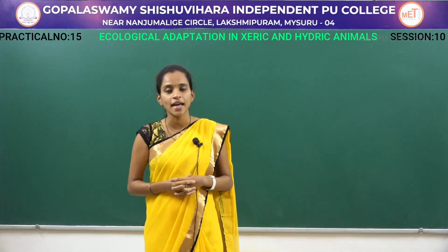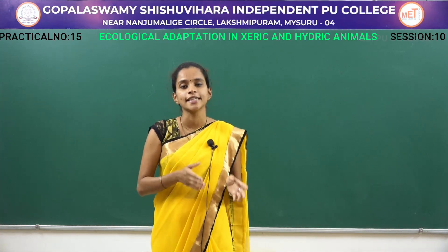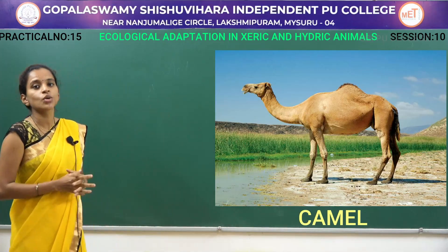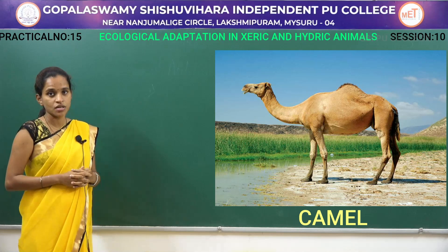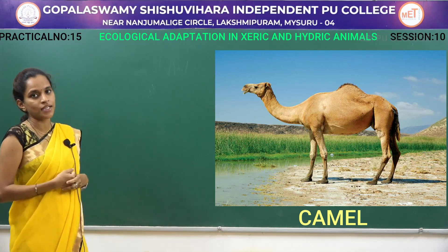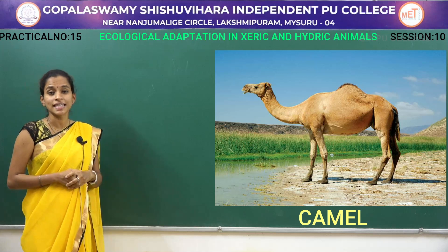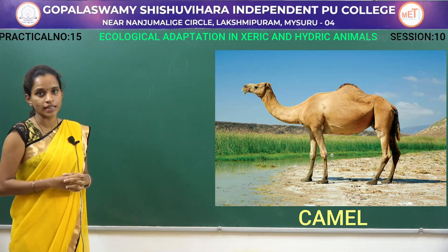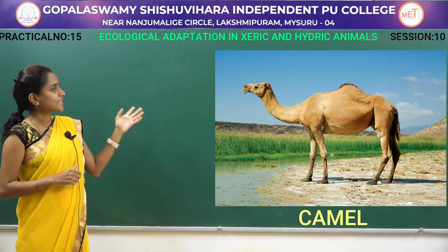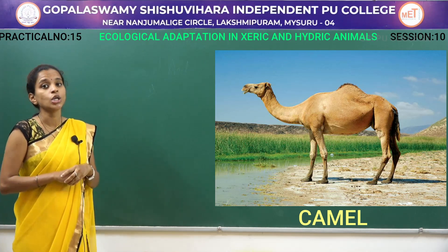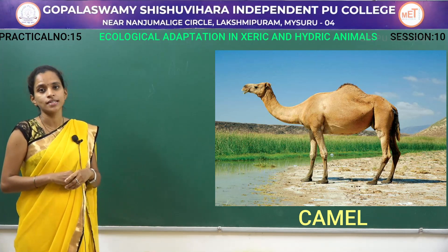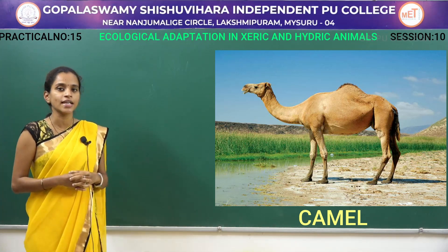Next we will study animal adaptations regarding xeric as well as hydric conditions. The first example will be the camel, which is a type of xeric adaptation. In the xeric region, camels have certain adaptations: they have hygroscopic rough skin all over their body, and the hump stores metabolic fat. Next, they release concentrated urine. They also have long eyelashes and pinhole-sized nostrils. These are the xeric adaptations in case of the camel.